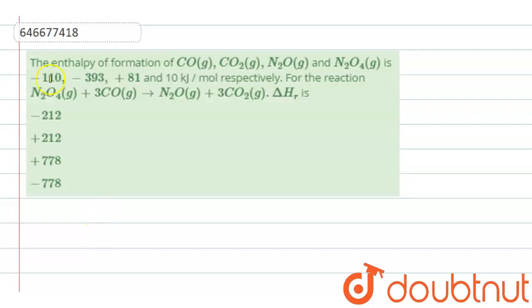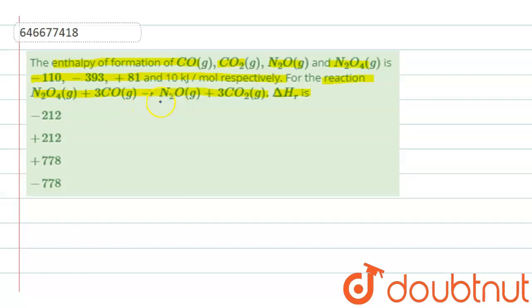The given question: the enthalpy of formation of CO, CO2, N2O and N2O4 is minus 110, minus 393, plus 81 and plus 10 kilojoules per mole respectively. For the reaction N2O4 plus CO gives N2O plus CO2, delta H of reaction is? So here we are given the reaction of dinitrogen tetroxide with carbon monoxide, which on reaction gives dinitrogen oxide and carbon dioxide. For this reaction we are supposed to find the enthalpy of the reaction.